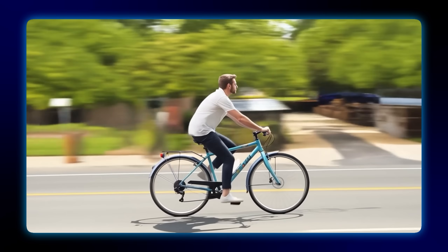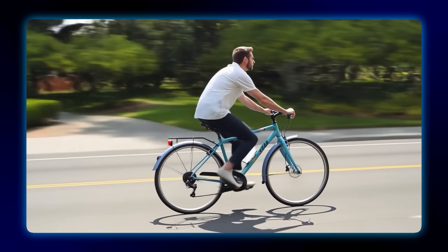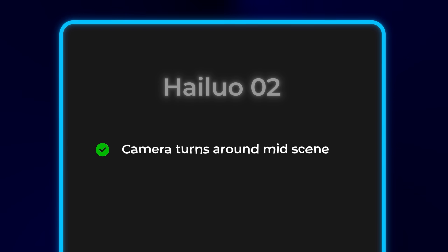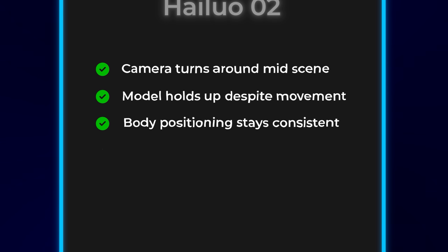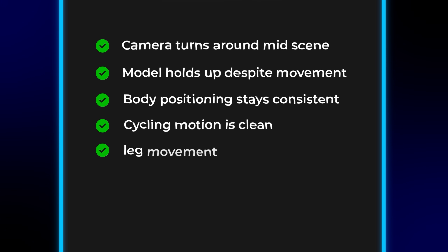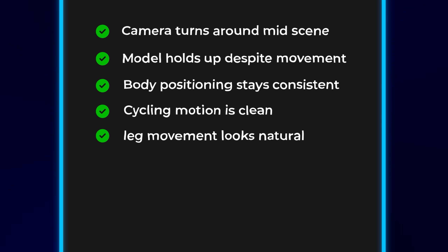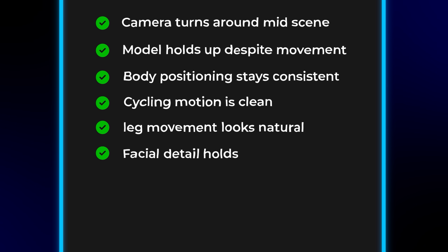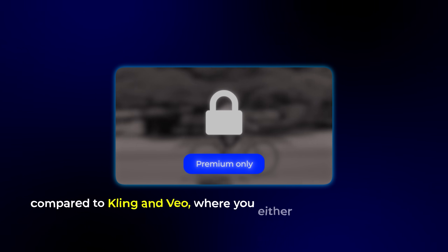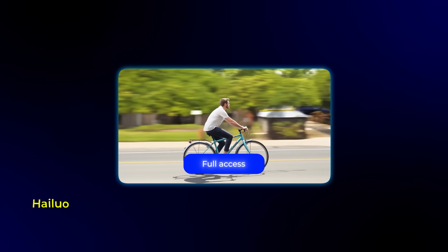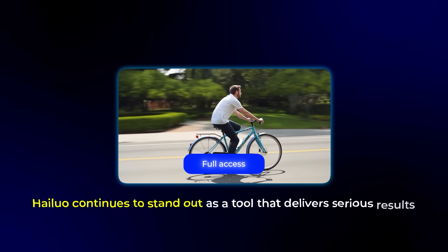Now back to Hilo. This one actually took a different approach — the camera turns around mid-scene, but what's interesting is how well the model holds up despite the unexpected movement. The body positioning stays consistent, the cycling motion is clean, and the leg movement — which is usually where these models glitch — looks completely natural. The facial detail holds, and even with the extra movement, nothing feels broken. And remember, this was all generated on Hilo's free tier. A free, public model delivering a full animated scene from a single image and prompt. Compared to Kling and VO, where you either get limited quality or need a premium subscription, Hilo continues to stand out as a tool that delivers serious results without the paywall.